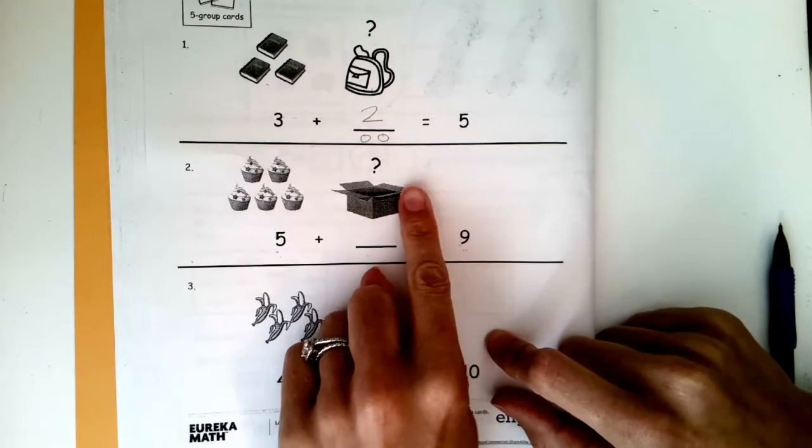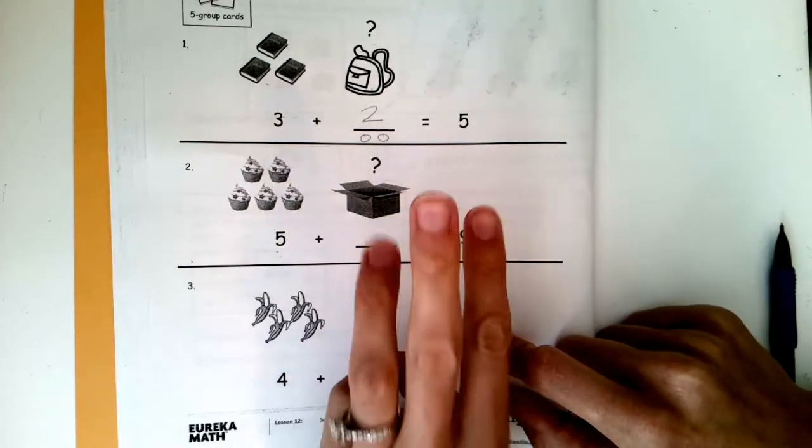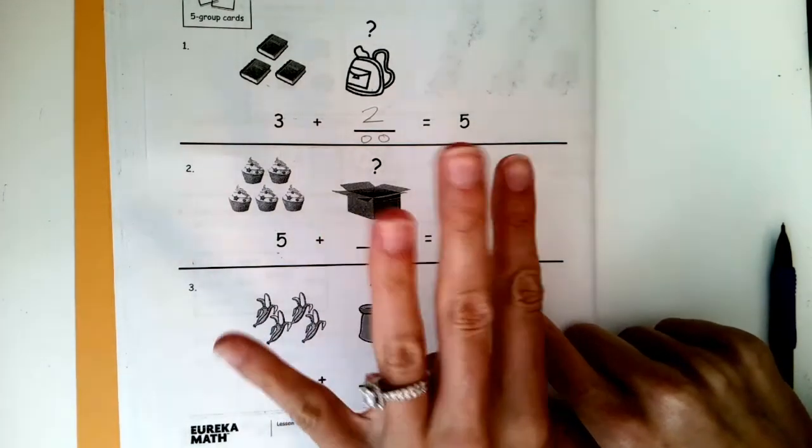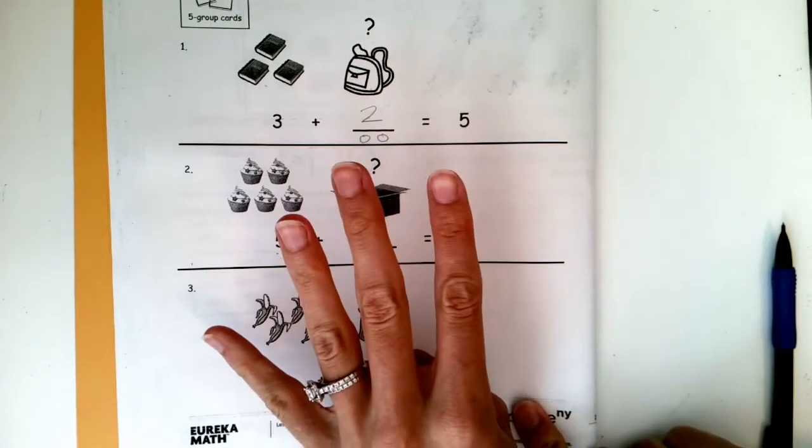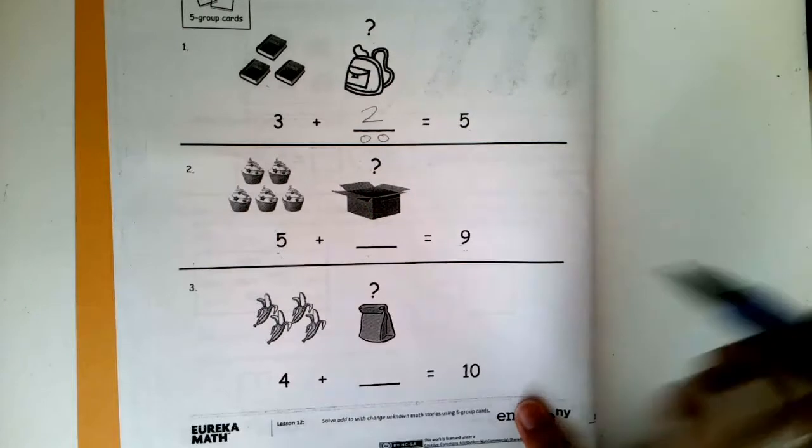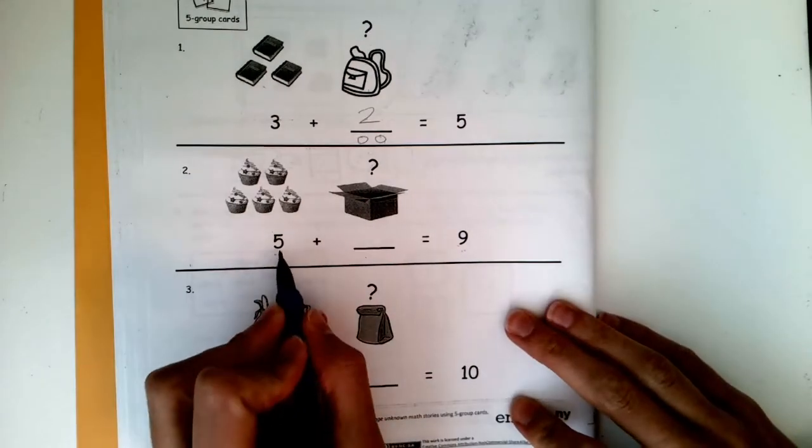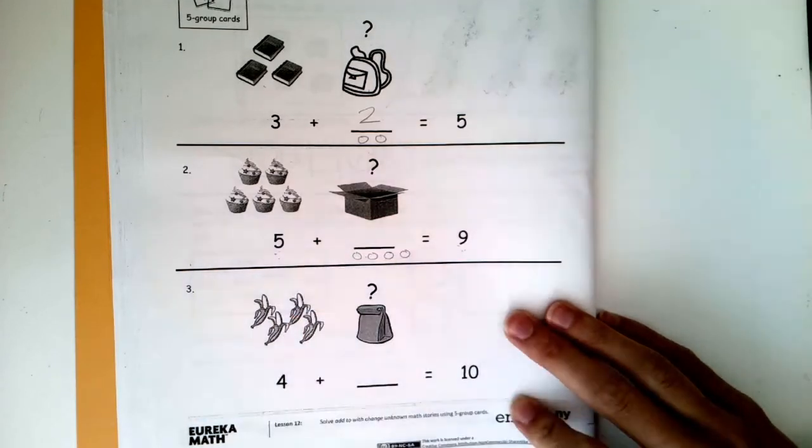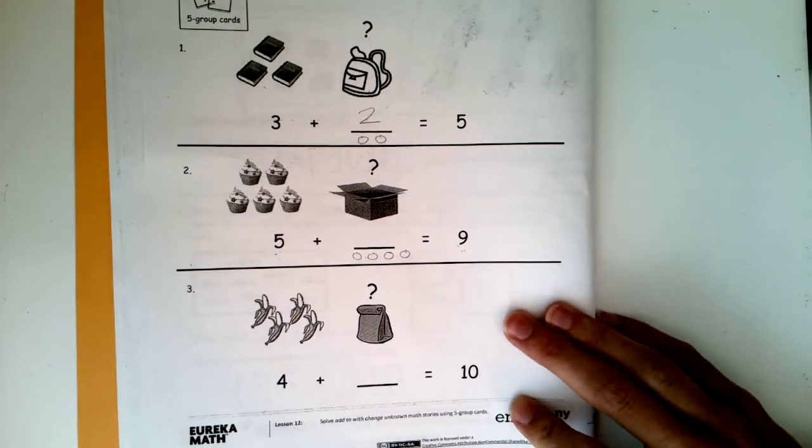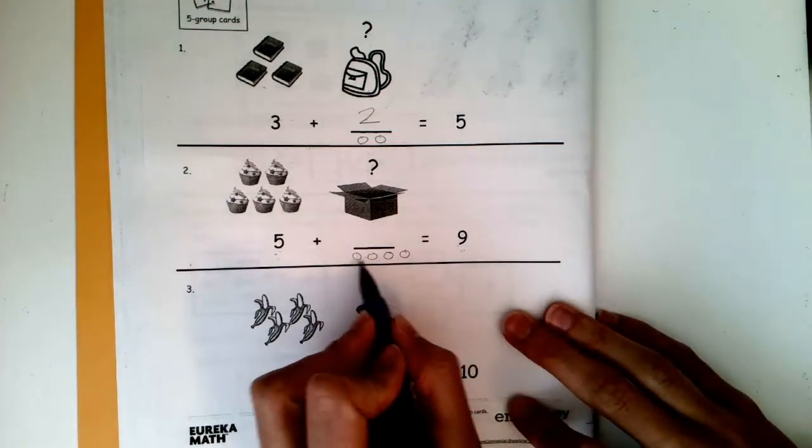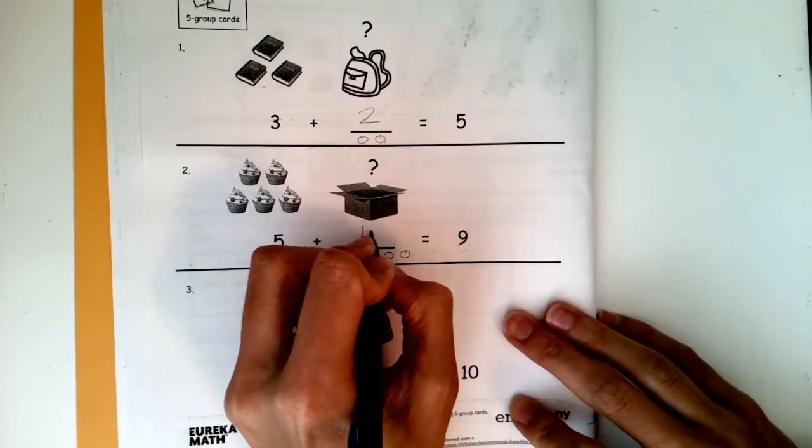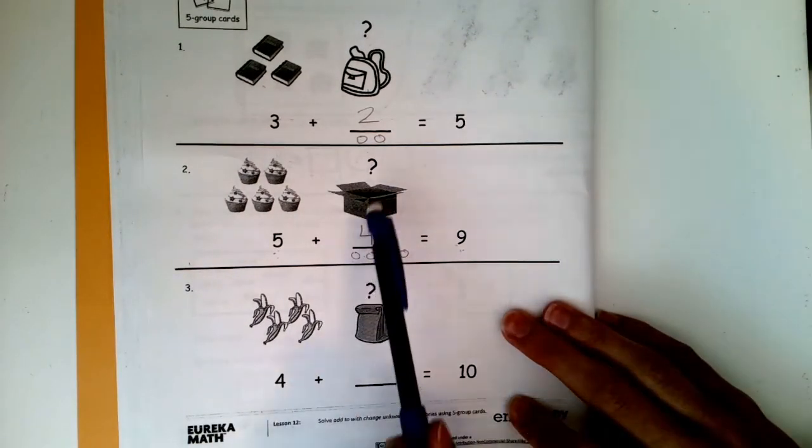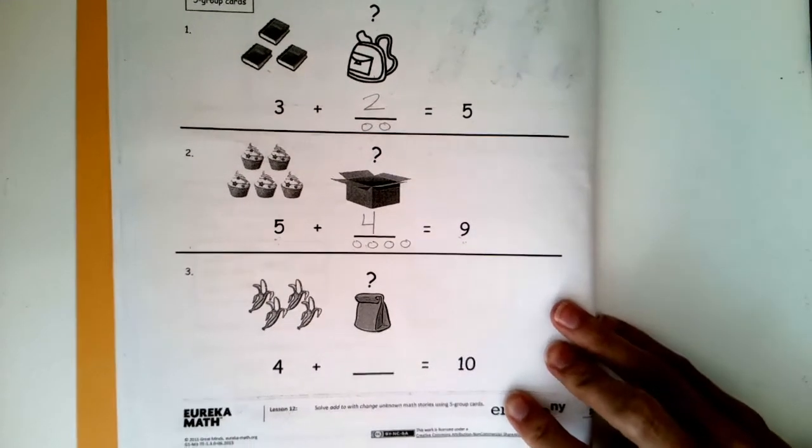Five. Let's do our finger strategy. Ready? Five, six, seven, eight, nine. Oh, ding, ding, ding. I made it to nine. Now look, how many fingers am I holding up? I'm holding up four. Let's double check it with our picture strategy. Five, six, seven, eight, nine. Do I also have four circles? Oh, one, two, three, four. Good. So both strategies gave me the same answer. Five and four make nine. There are four cupcakes in the box. Good work.